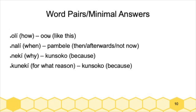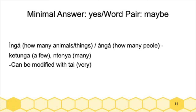For 'oli' I got a few which are basically exactly what I was expecting. Andrew mentioned the 'o' there does a lot. 'Nali pambele' means a lot of different things — 'then,' 'afterwards,' 'not now' — so very broad. For 'niki' meaning 'why,' the answer was 'kunzoko,' which is apparently a complete answer. If anyone asked Nico a question with 'why,' he said he very often just answered 'kunzoko.' And the same for 'kunniki' meaning 'for what reason' — he got the same answer 'kunzoko.'